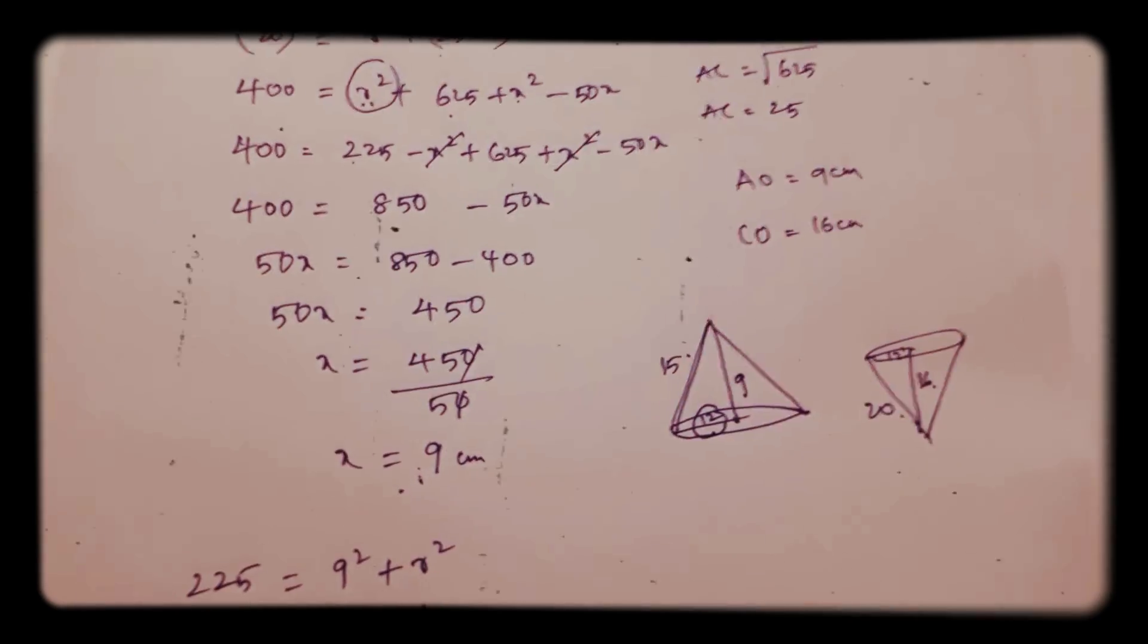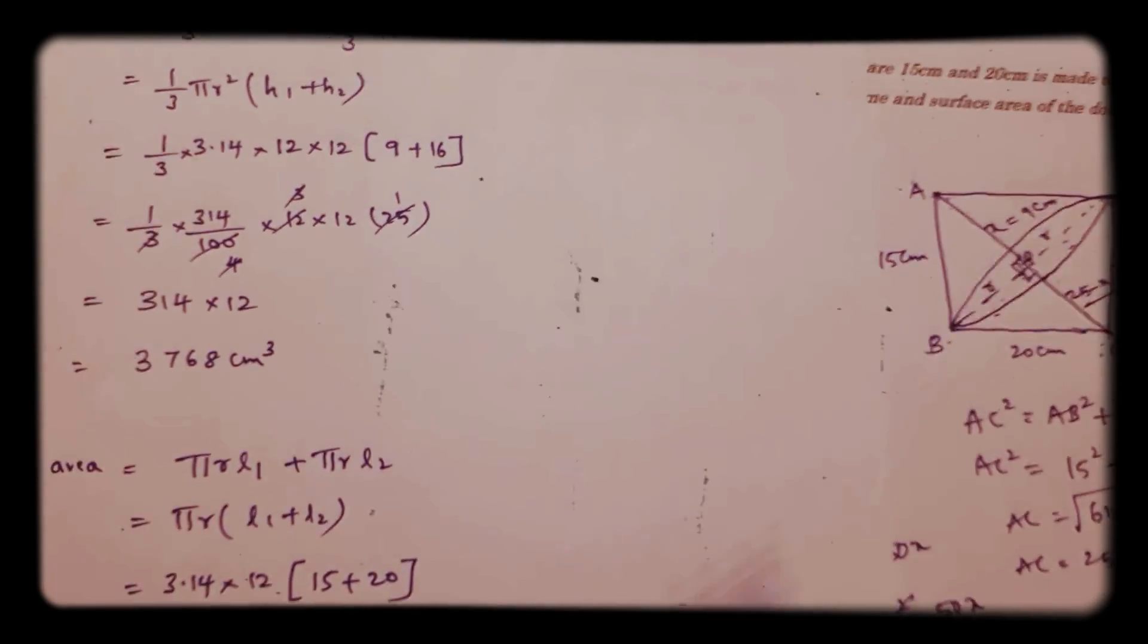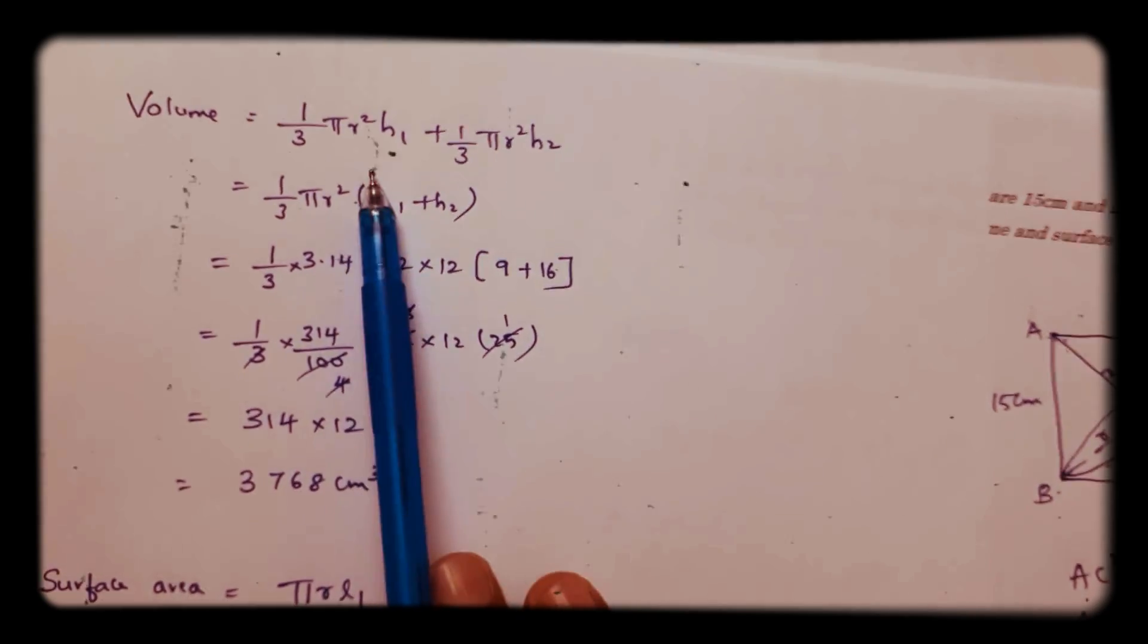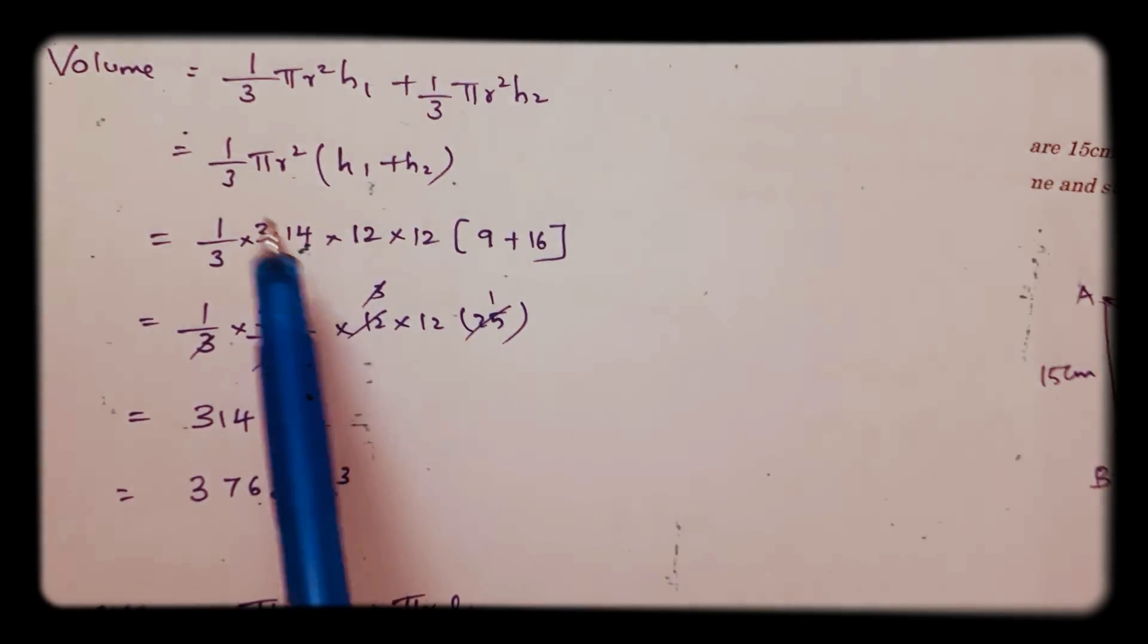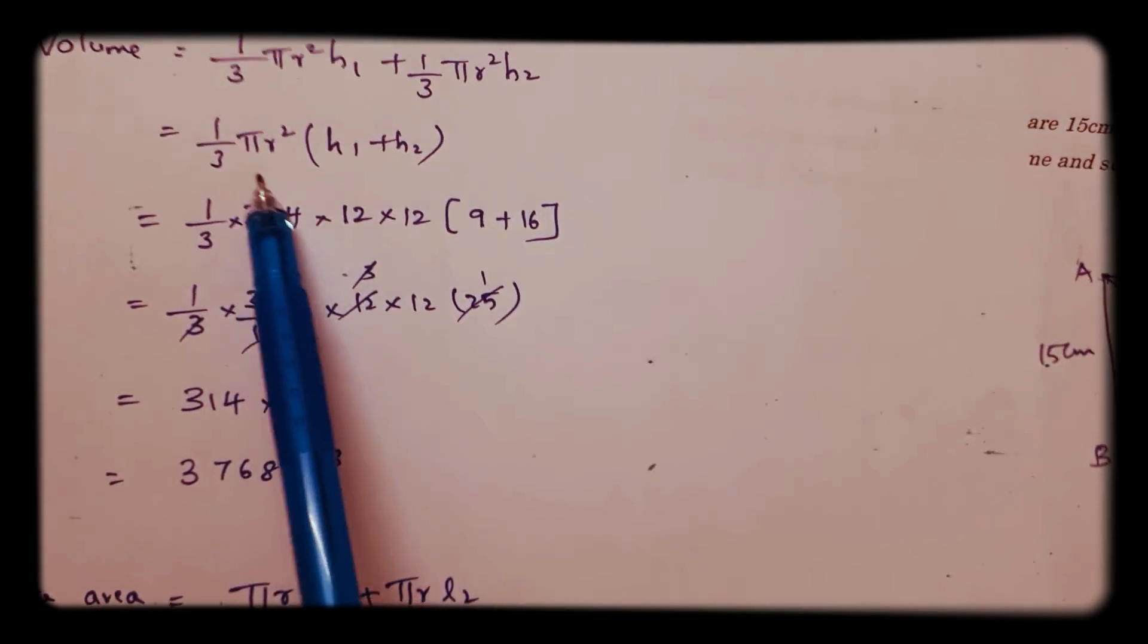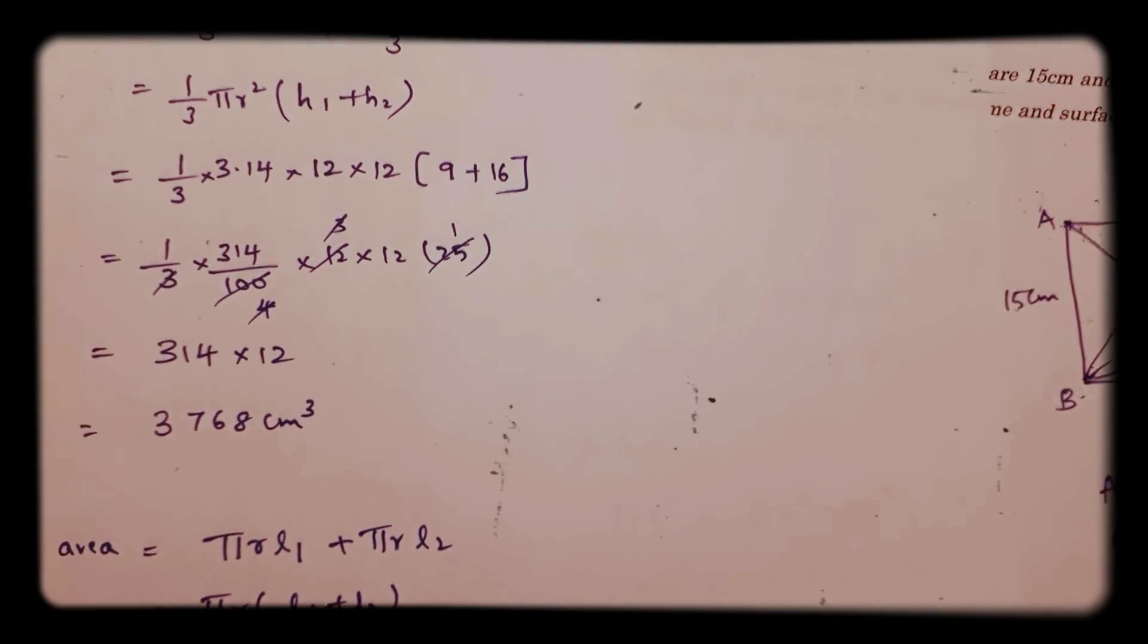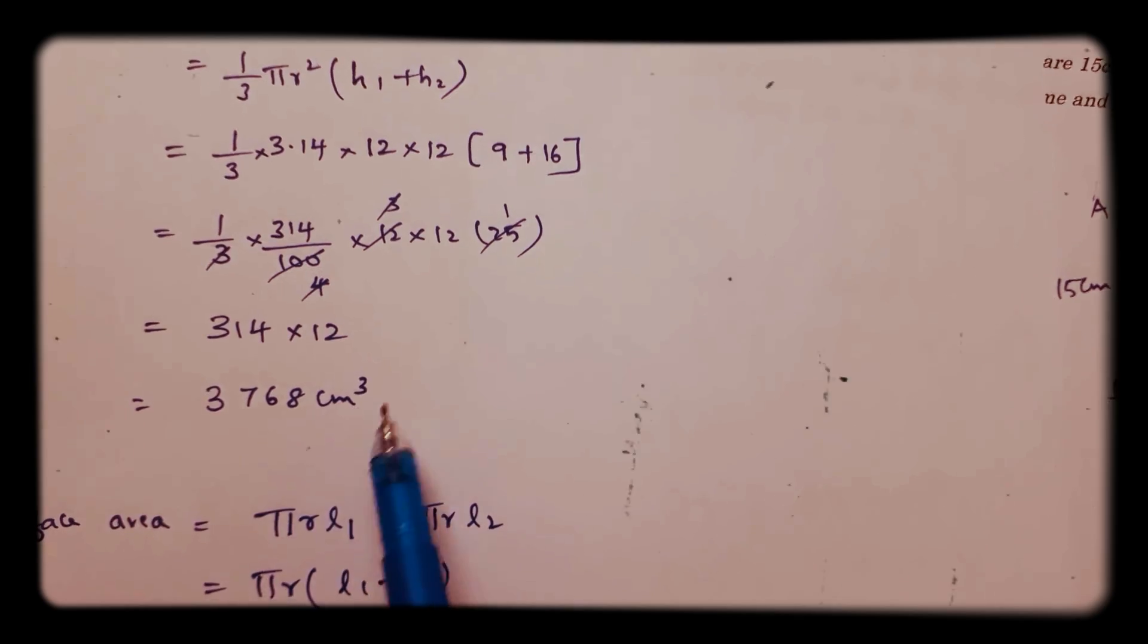Now they are asking volume. Volume of both the cones, top cone and bottom cone. So directly I added 1/3 π R² H₁ and 1/3 π R² H₂. If we take 1/3 π R² common, H₁ plus H₂. H₁ is 9 and H₂ is 16, which is 25. On cancellation I got 3768 cm³.